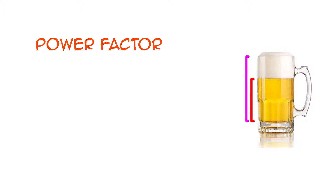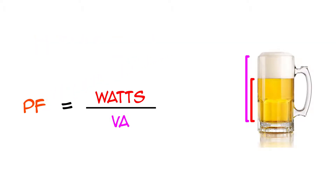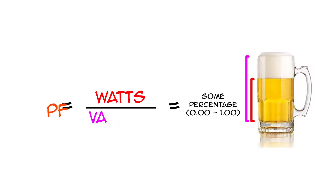No one wants to do trigonometry if they don't have to. In fact, you're not nearly as likely to see volt amps reactive as you are to see power factor, or PF. Simply put, power factor is the ratio of watts to volt amps — in other words, what percentage of the occupied volume is liquid beer. You can also divide the watts by the power factor to figure out the volt amps.